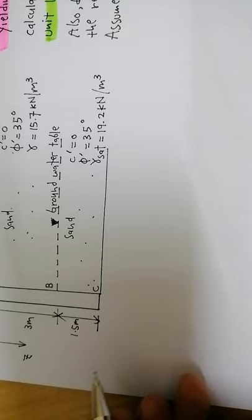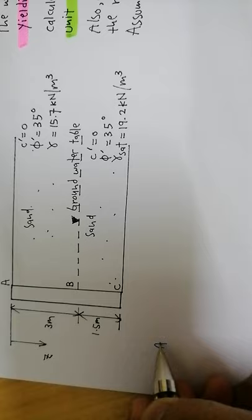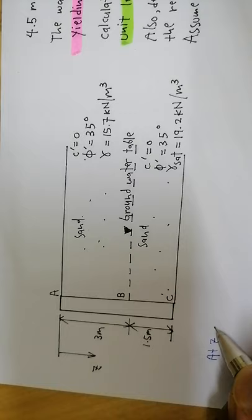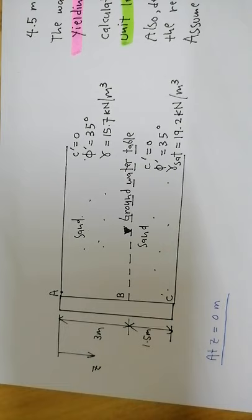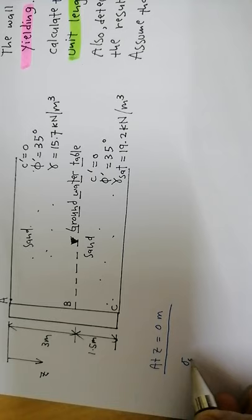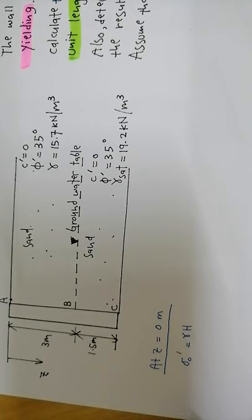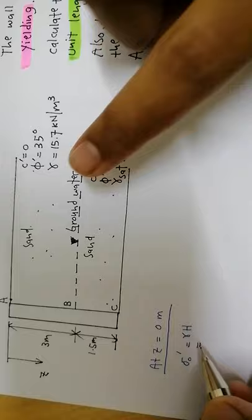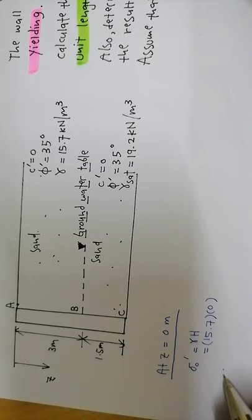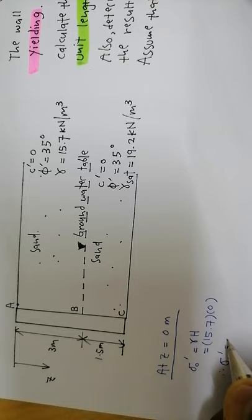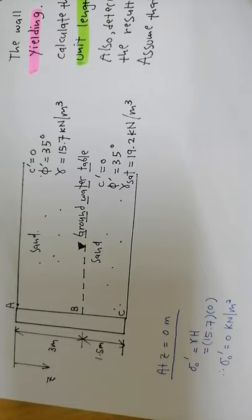Starting at z equals 0 meters: the vertical effective stress equals gamma times h. With gamma of 15.7 and h equals 0, the vertical effective stress equals 0 kN/m².